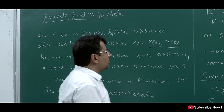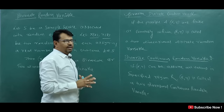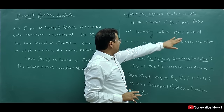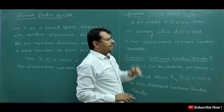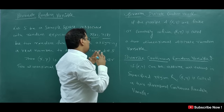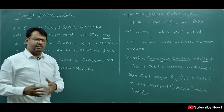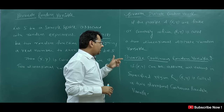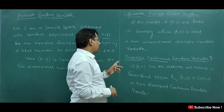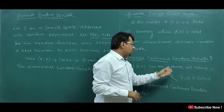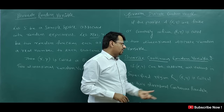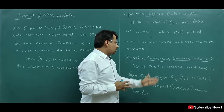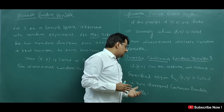What is Bivariate Discrete Random Variable? If the possible values of (X, Y) are finite or countably infinite, then (X, Y) is called a two-dimensional discrete random variable. The concept of one-dimensional discrete random variable is the same, except there are two variables here. What is Bivariate Continuous Random Variable? If X and Y can assume all values in a specified region, then (X, Y) is called a two-dimensional continuous random variable.